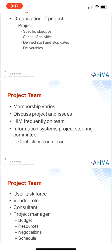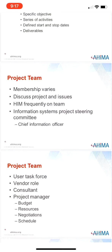Most, if not all, information systems require a project team of individuals to successfully implement the information system. The number of individuals and the composition of this team vary from project to project. For example, if the healthcare facility is implementing a chart deficiency system for use only in the HIM department, the project team should include the appropriate people in HIM and information systems — it would not need to include physicians, nurses, risk managers, or laboratory staff. If implementing a computerized provider order entry system, the project team would need representatives from physician staff as well as HIM, nursing, lab, pharmacy, and other impacted departments.